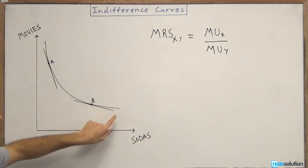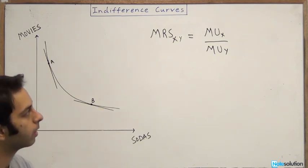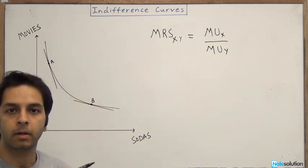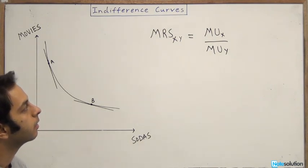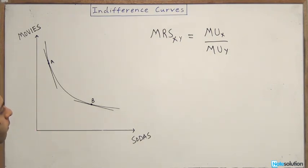Since, remember, indifference curves measure utility, and since you're on one indifference curve, you're going to be on constant utility. So, coming to that, for example, let's take point A.